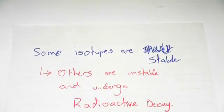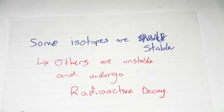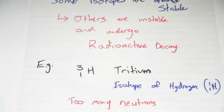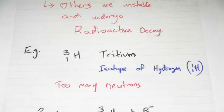So some isotopes are stable, others are unstable and will undergo radioactive decay. So example is here. This is tritium, hydrogen-3. So it has one proton and two neutrons.